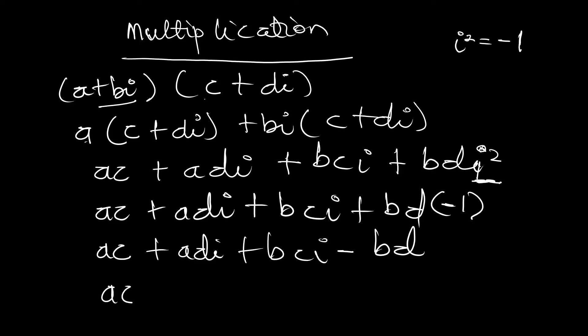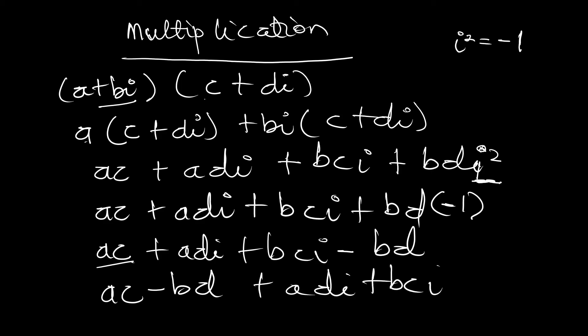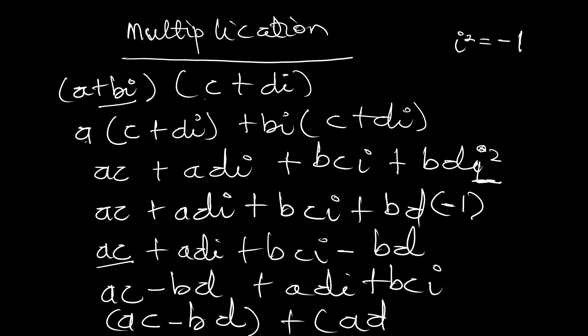When we group the real parts and the imaginary parts, we get ac minus bd as the real part — because those terms have no i attached — and adi plus bci as the imaginary part. We can rearrange this nicely as ac minus bd plus the quantity ad plus bc times i. This is simply how we multiply complex numbers — the same way that we expand or redistribute two brackets. Now let's take an example.